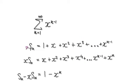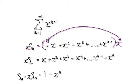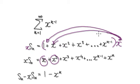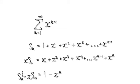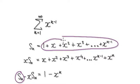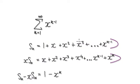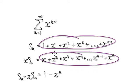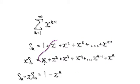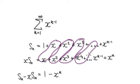From here, times both sides by x. So x times S_n gives you x, x squared, and so on. Now get S_n and take away x times S_n. When you do that, these pairs of terms will cancel out — these two cancel, these two cancel, these two cancel, and these two cancel.